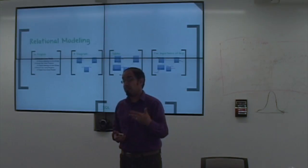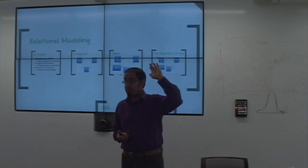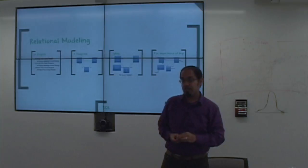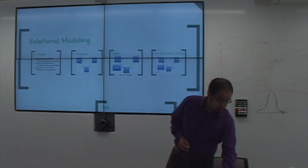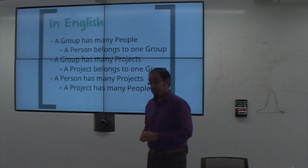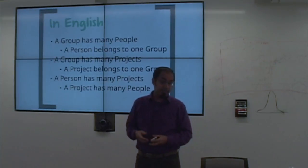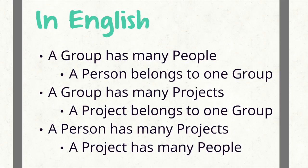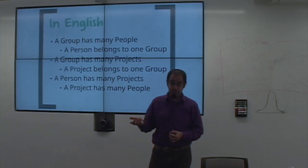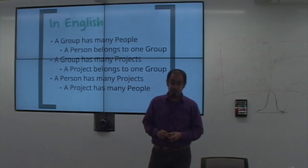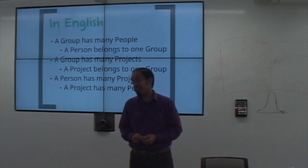How many of you have used a relational database before? How many have used a document database, a non-relational database? So what do I mean when I say relational modeling? I mean stuff like this: if you look at the Media Lab, you can think about the fact that a group has many people, and the flip side is that a person belongs to a group. A group has many projects, and a project belongs to one group. A person has many projects, and a project has many people. These are relations — that's why it's called relational modeling.